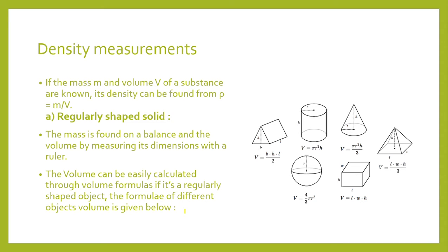For a regularly shaped object such as a prism with a triangular cross-section, a cylinder, a cone, or a pyramid, there are specific volume formulas for each. If an object does not match these shapes, there are other mathematical techniques to find its volume. To find the density of a regularly shaped solid, take its mass using a digital balance — a digital scale is preferred over a comparison balance for accuracy — then apply the volume formula.